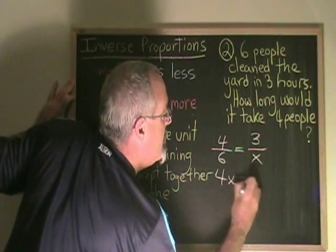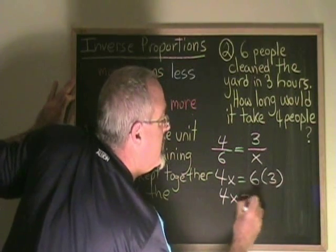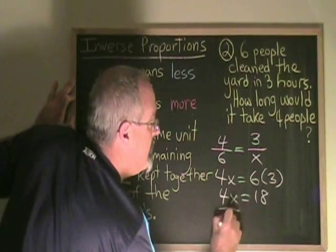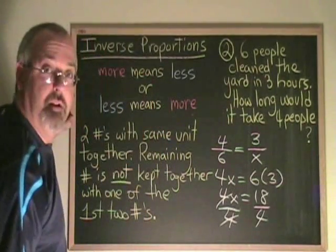Cross multiplying, I get 4x equals 6 times 3. 4x equals 18. Dividing both sides by 4, the fours cancel on the left.